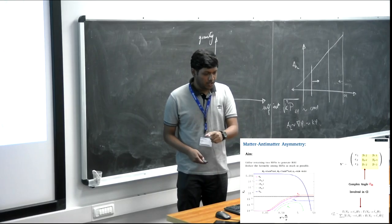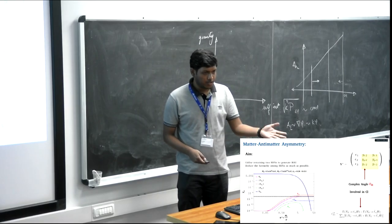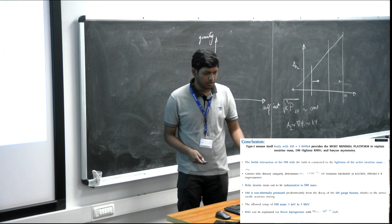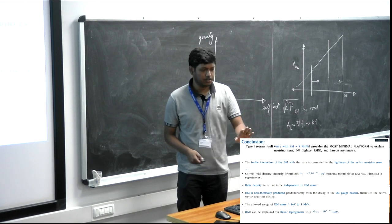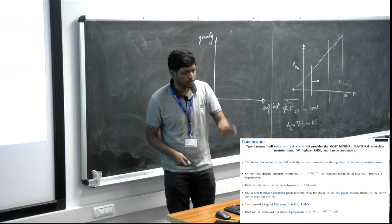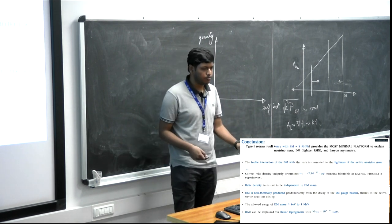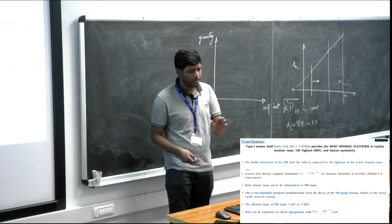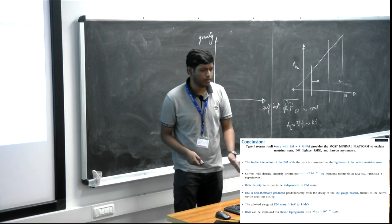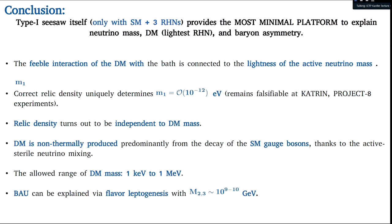The other two right-handed neutrinos can be used for leptogenesis. Ultimately, Type I seesaw provides the most minimal platform to explain neutrino mass, dark matter, and baryogenesis simultaneously.